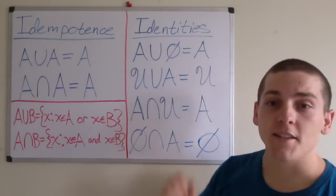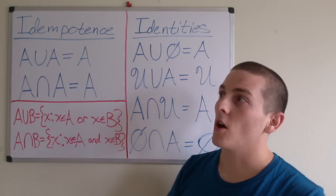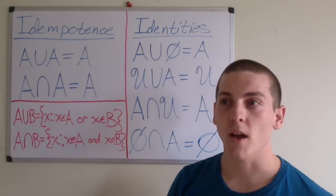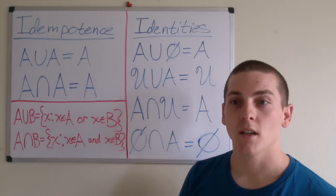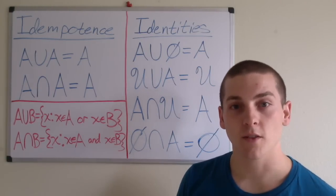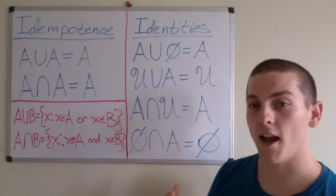Next, we have our identity laws. Identity laws are laws where we have a given set and we're performing an operation on that set with a given element. These elements are the identity elements. So for this case, we have the null set and the universal set as identity elements.